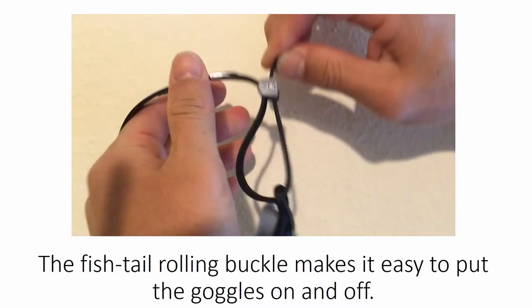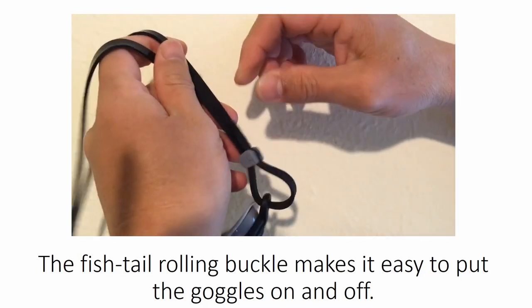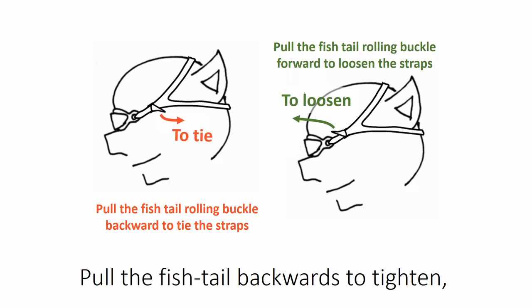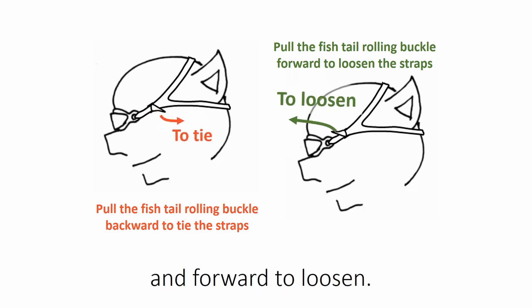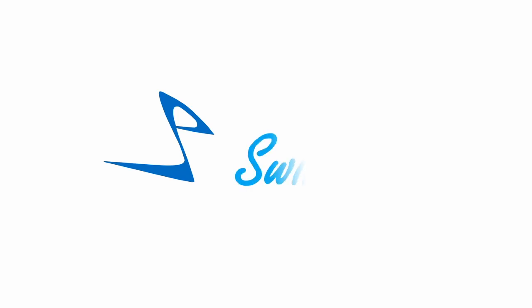The fishtail rolling buckle makes it easy to put the goggles on and off. Pull the fishtail backwards to tighten and forward to loosen. Snake & Pig, swim on!